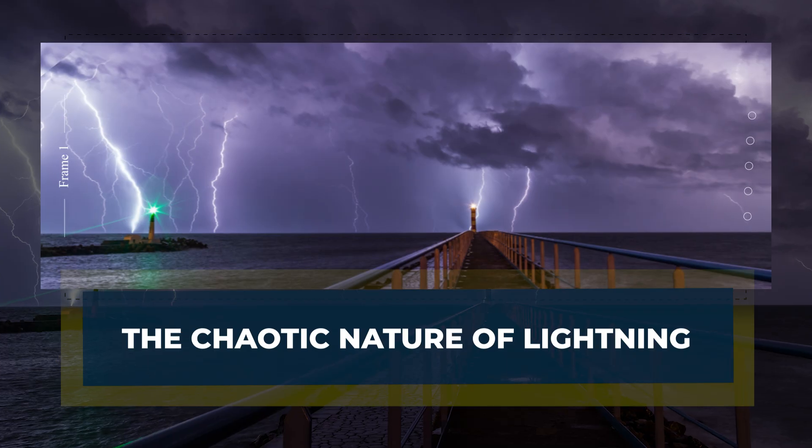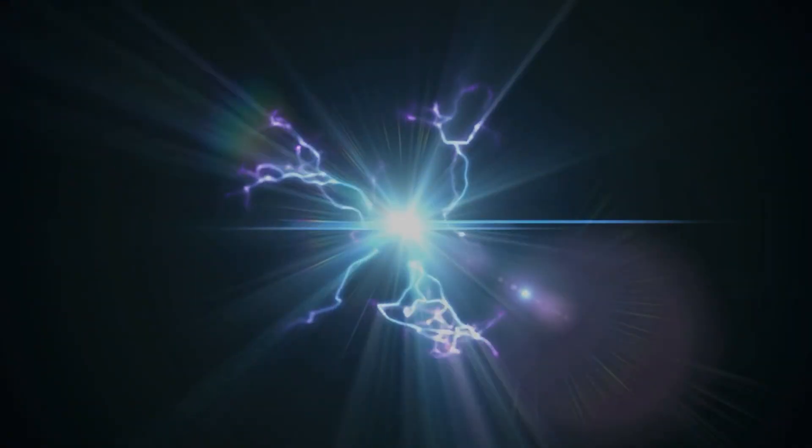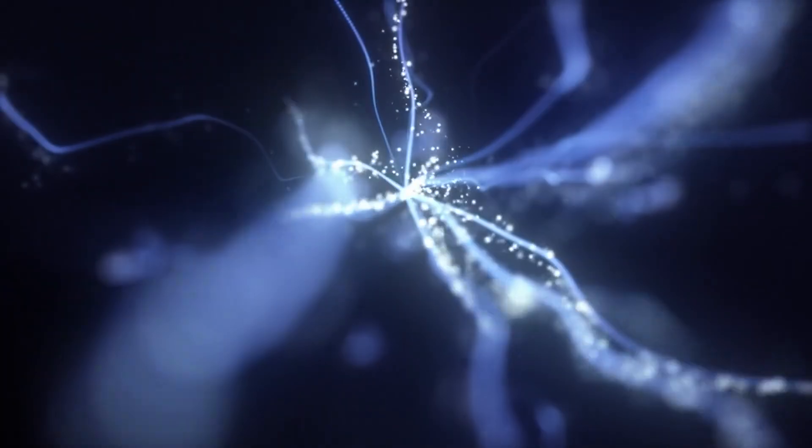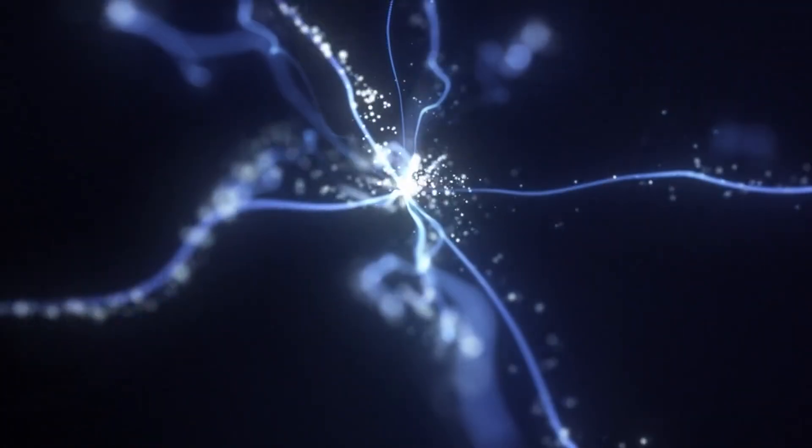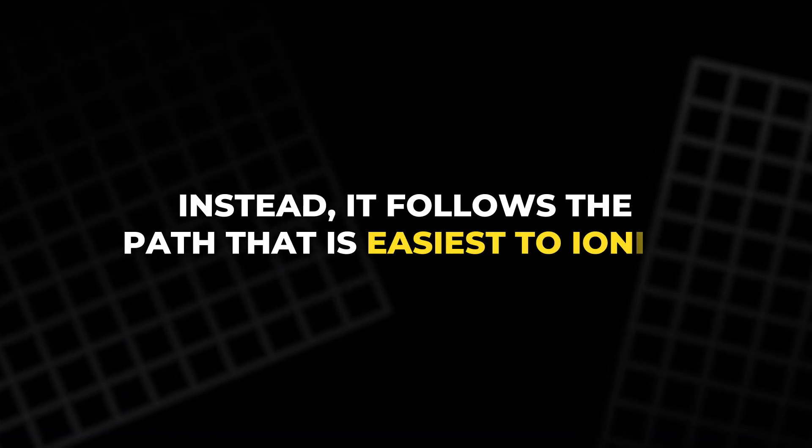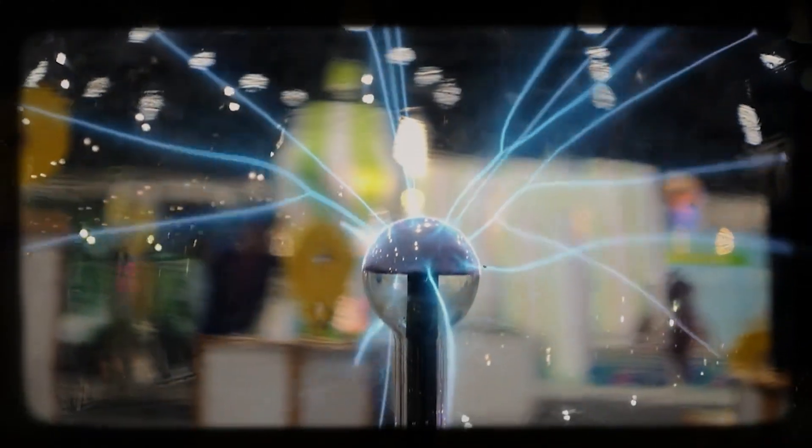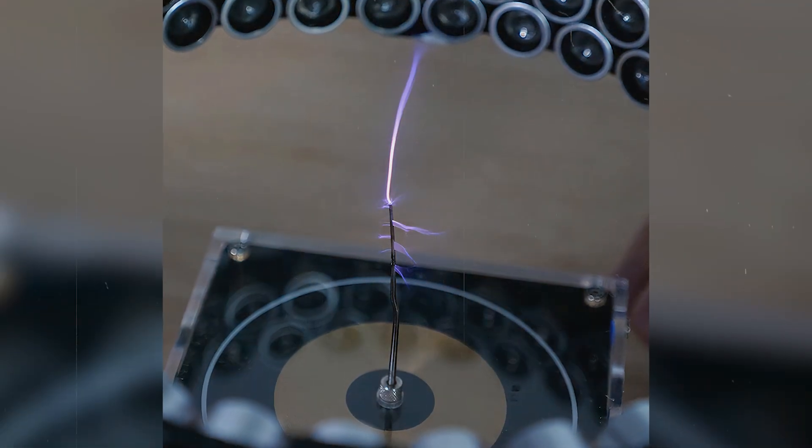The chaotic nature of lightning: Lightning, sparks, and other electric discharges often appear random. When a bolt of plasma strikes, its path twists and branches unpredictably. This happens because electricity does not always choose the shortest or simplest route. Instead, it follows the path that is easiest to ionize. Ionization means stripping electrons from air molecules so current can pass through.